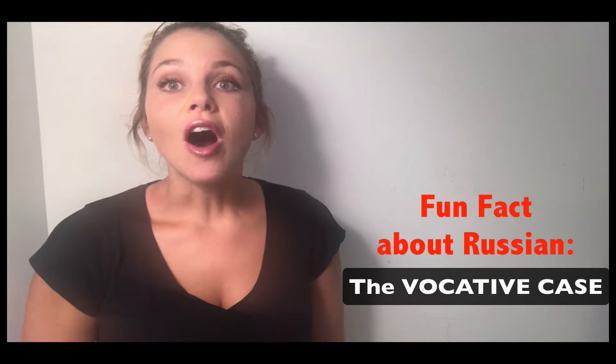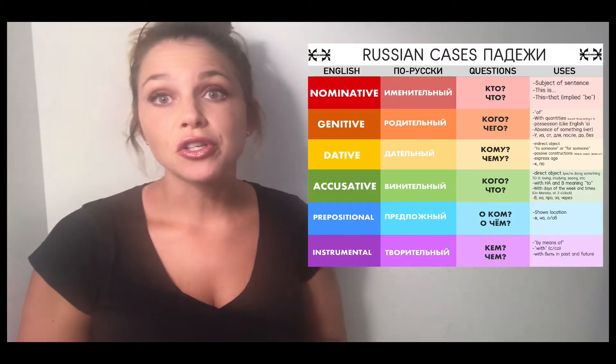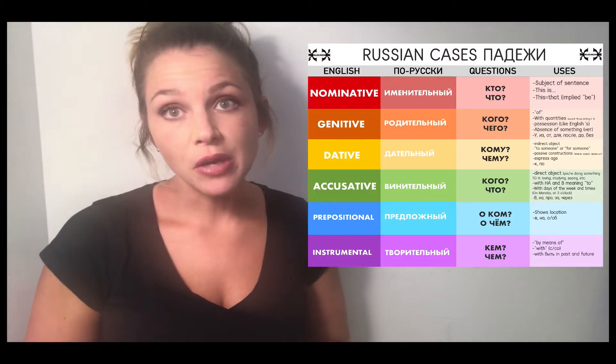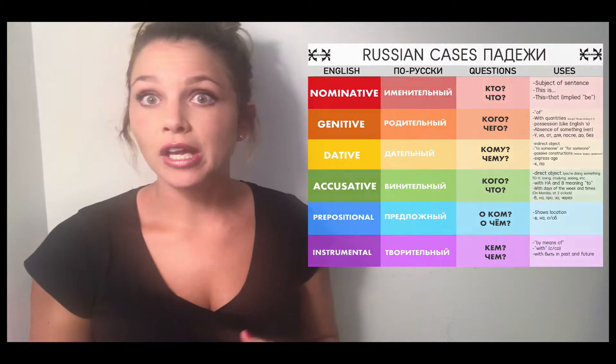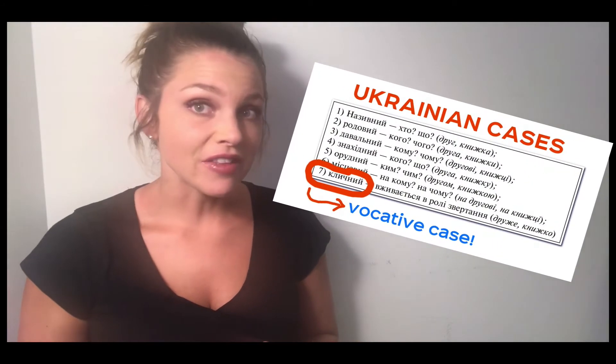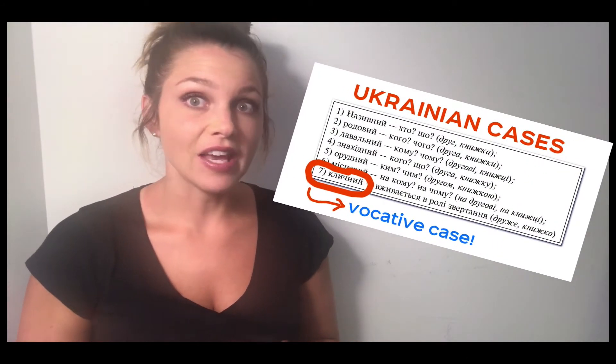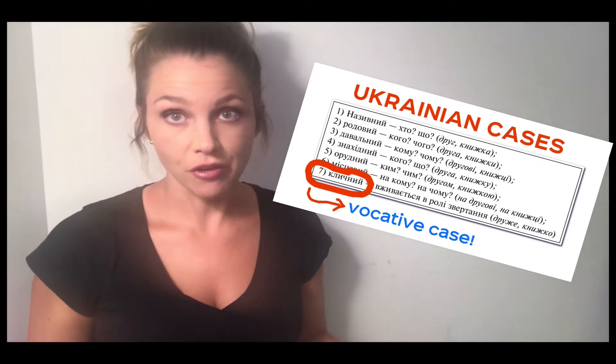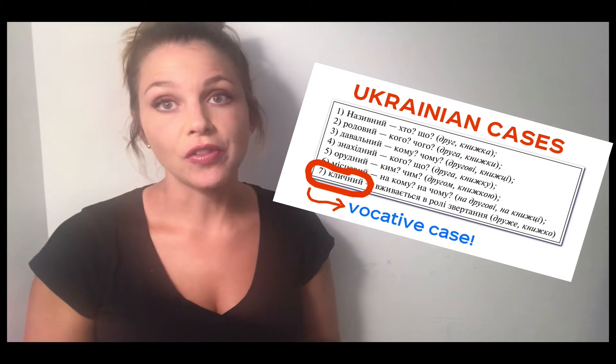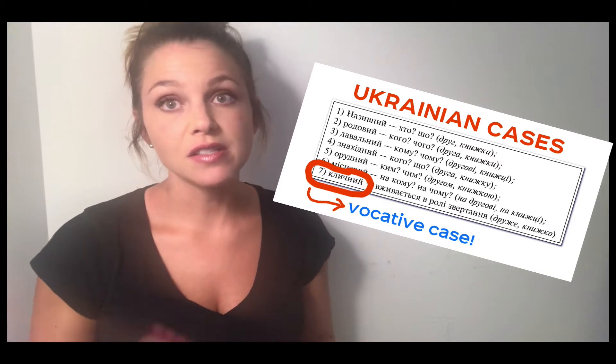So all this time you've been living your life thinking that there are six cases in Russian, and you are correct — there are officially six cases in Russian. But if you've ever gone to learn another Slavic language, like Ukrainian or Czech, you'll notice that they have a seventh case used in everyday usage. It's called the vocative case.